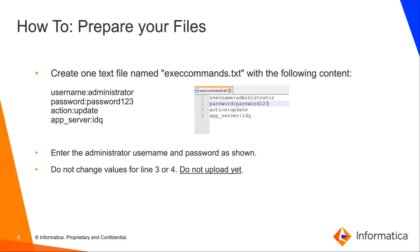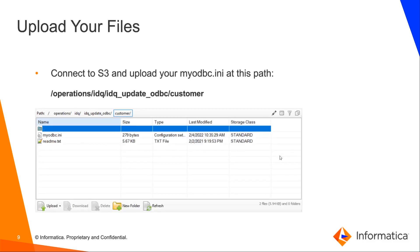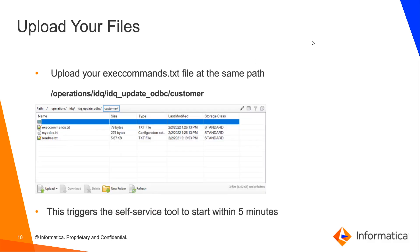After that, you create one other file called execcommands.txt. It should look exactly as shown, in lowercase, other than your password. At this point, you can connect to your S3 bucket and navigate to the specified path. Be sure that you go to the customer directory and place your myodbc.ini file there. Then upload your execcommands.txt file in the same directory. This will trigger the tool to run within five minutes.